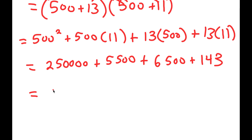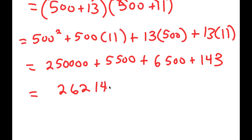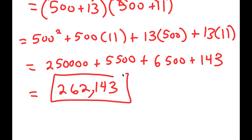So now I'm going to add all these up. 5,500 plus 6,500 is 12,000. 250,000 plus 12,000 is 262,000. And 262,000 plus 143 is equal to 262,143. So my final answer is 262,143.